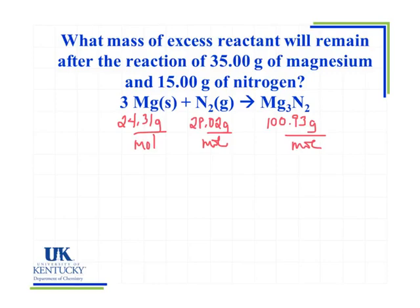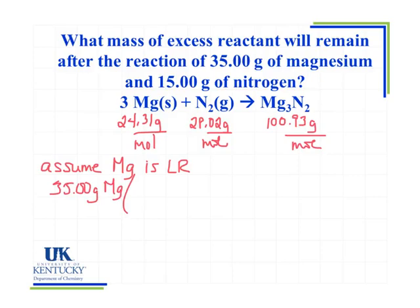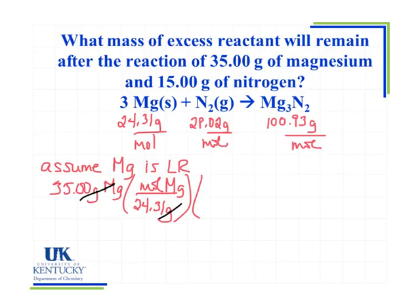Now I need to take the approach of assuming that one of my reactants is limiting — it doesn't really matter which one I start with. So we're going to assume magnesium is limiting first. If magnesium is my limiting reagent, I have 35 grams of magnesium, and I need to convert that to moles because all stoichiometric calculations require moles. So I use 24.31 grams per mole of magnesium, putting grams on the bottom to cancel. Then I use 3 moles of magnesium for every 1 mole of magnesium nitride.